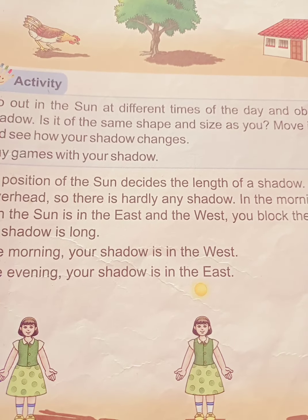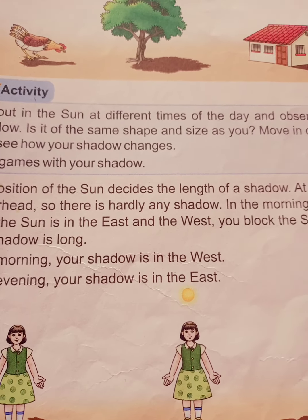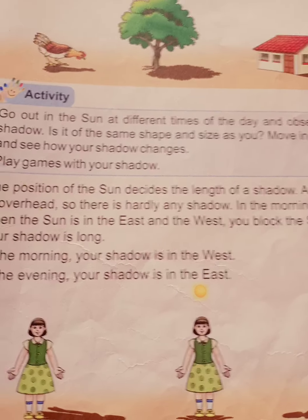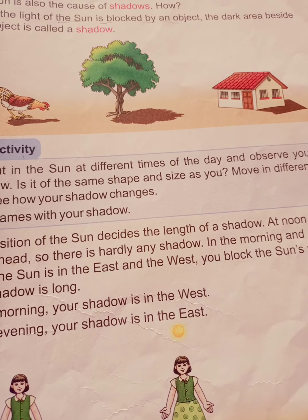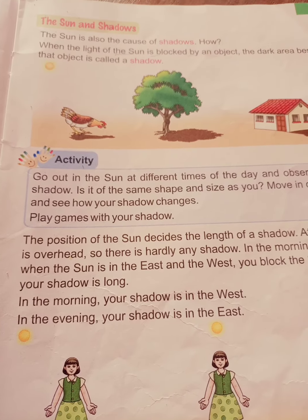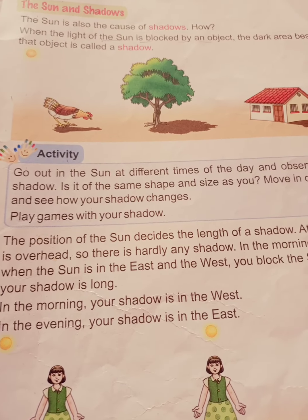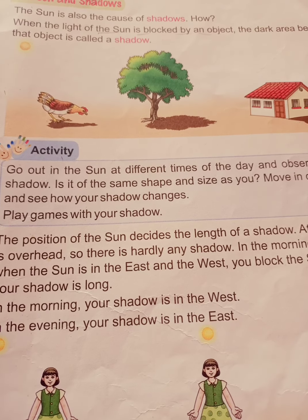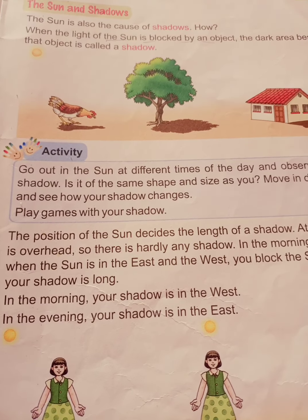When the light of the sun is blocked by an object, the dark area beside that object is called a shadow. You can see the picture on page 169 — it shows how the sun is the cause of shadow. When the light of the sun is blocked by an object, the dark area beside that object is called a shadow.